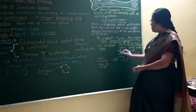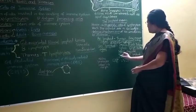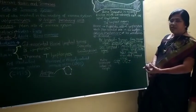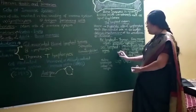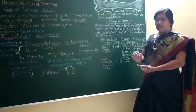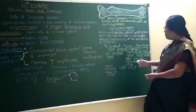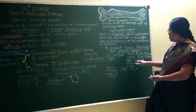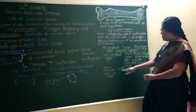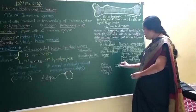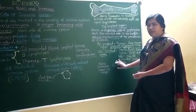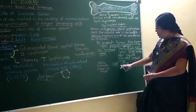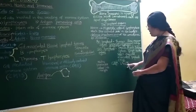Secondary lymphoid organs are found where the mucosa is — such as the gut, the urinogenital tract, and the respiratory tract. Where a mucosal lining is present, the tissue is called mucosal-associated lymphoid tissue, or MALT. This includes the gut-associated lymphoid tissue and the urinogenital lymphoid tissue found in the urinogenital tract wall.